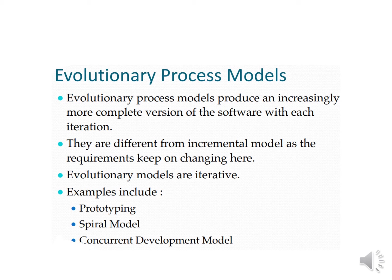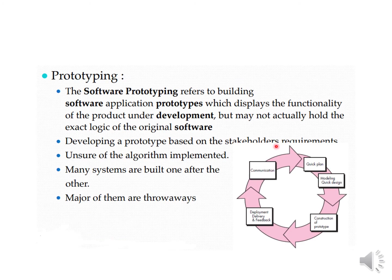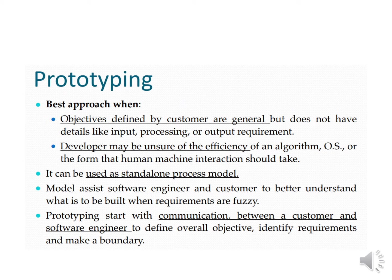The evolutionary process model has three different types: the prototyping model, the spiral model, and the concurrent development model. In this lecture we are focusing on the prototyping model. As shown in the diagram, after every communication with stakeholders you get new requirements, and for that purpose you can use the prototyping model. It can be used as a standalone process model.